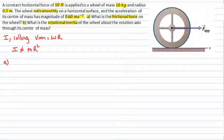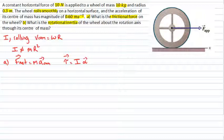For part A, we need to find the frictional force on the wheel. We should use Newton's laws: the net force equals mass times acceleration of the center of mass. And because it's rolling motion there's also rotation, so we use the rotational analog of Newton's second law: torque equals rotational inertia times angular acceleration. Since we're given the mass and acceleration as numerical values, we can find the net force, and since one of the forces is given, we can find the frictional force.